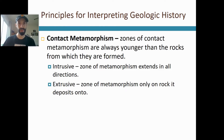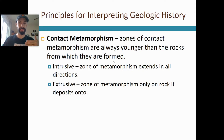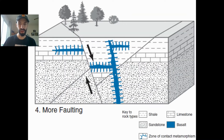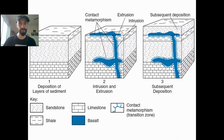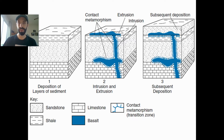Contact metamorphism — we learned about this earlier when we talked about metamorphic rocks. Anywhere you have contact metamorphism, it changes the rock it comes in contact with, by heat only, not pressure. When you look at a picture like this, the area next to the intrusion shows contact metamorphism — those rocks get changed after the intrusion comes through. When an intrusion comes through to the surface, it becomes an extrusion. You can see contact metamorphism alongside it. Afterwards, more sediment gets deposited on top, and since there's no contact metamorphism on top of the intrusion, that tells us the sand was deposited after it cooled.